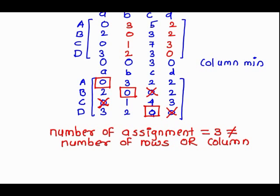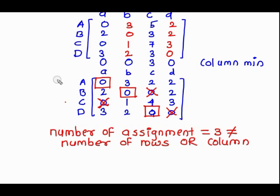To improve the solution, first find a row with no assignment. The third row has no assignment, so we take that row. In that row there is only one zero, so we take the corresponding column. In that column we find an assignment, and then take the corresponding row.